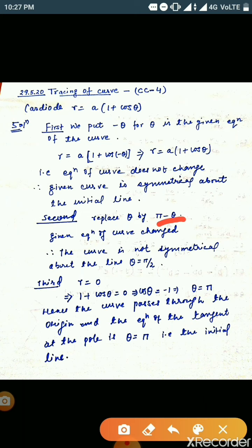In the second step, we replace θ by π - θ. Then the given equation of the curve changes, because there is a cosθ and we have π - θ. Therefore, the curve is not symmetrical about the line θ = π/2. In the third step, we put r = 0. Putting r = 0 in the left-hand side of the given equation, we see that θ = π.